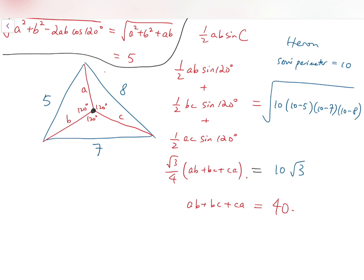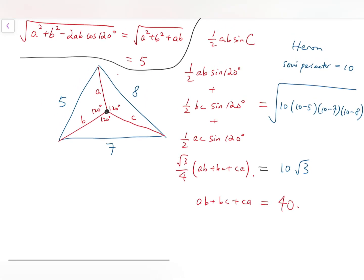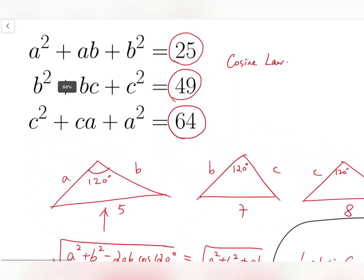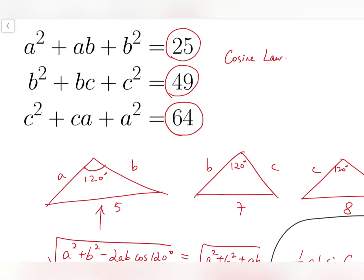And this will be enough for us to find the value of a plus b plus c all squared. It's not enough for finding a, b, and c separately, but enough for our problem. So, back to our system. We have that ab plus bc plus ca equals 40.